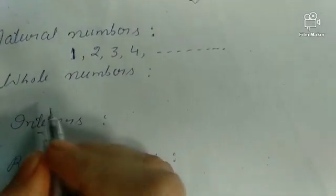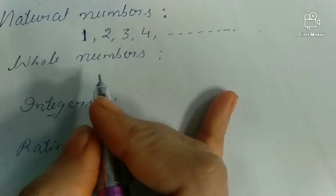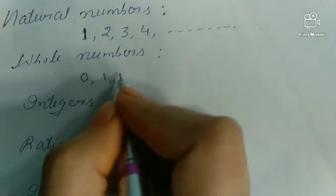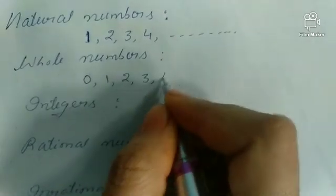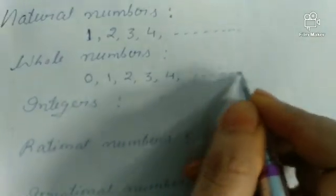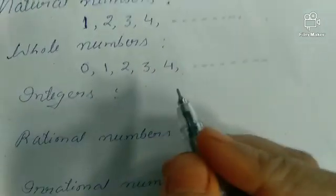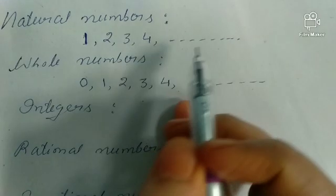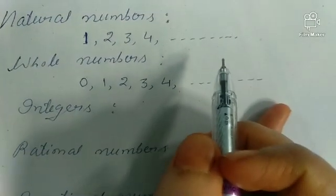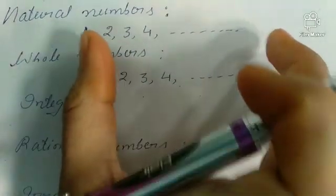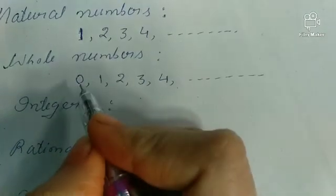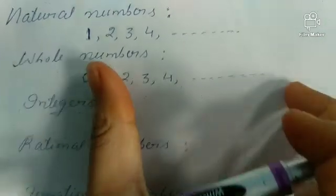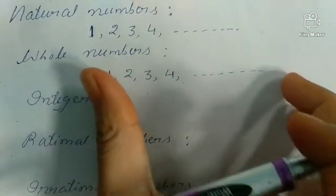Then let us come to whole numbers. Whole numbers means 0 and the natural numbers. 0 and all the natural numbers constitute whole numbers. So when we add 0 to the counting numbers, this number system is known as the whole number system.